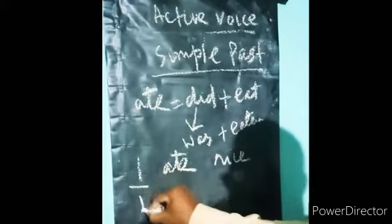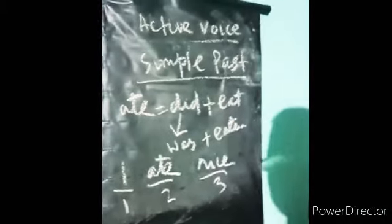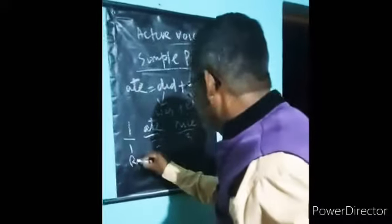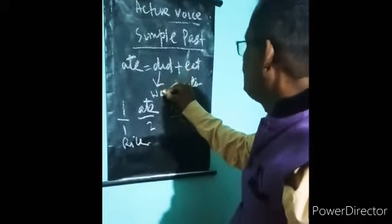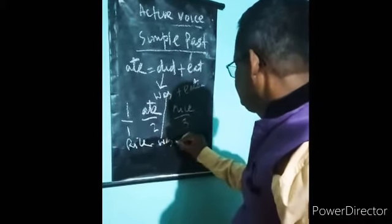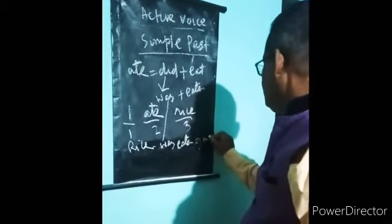Similarly, I is the subject one, ate is the verb phrase two, rice is the object. In answering this question, in passivizing this sentence, we have to write rice was eaten by me. Did becomes was.